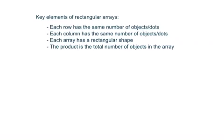So some key elements of rectangular arrays, things that you should notice when you look at them. You're going to want to write these things down. Each row has the same number of objects or dots. Each column has the same number of objects or dots. Each array has a rectangular shape. And the product is the total number of objects in the array. Product, that's a multiplication term. The answer in a multiplication problem is the product.